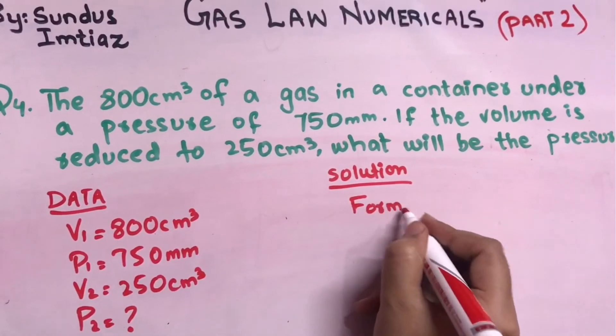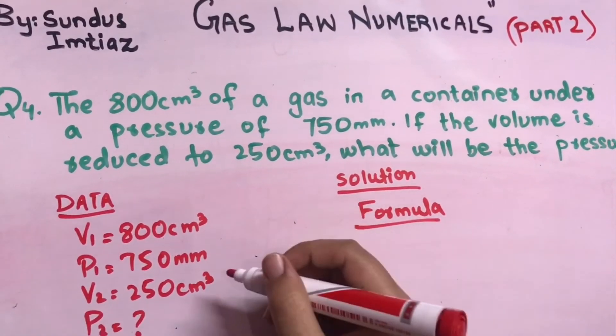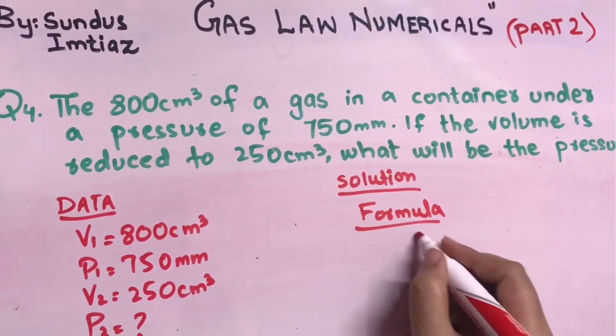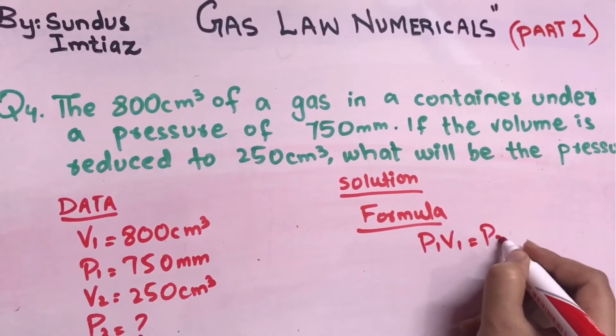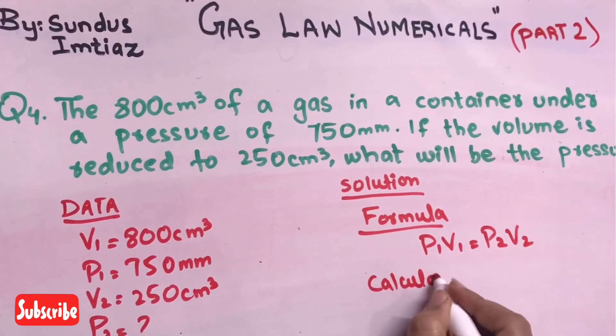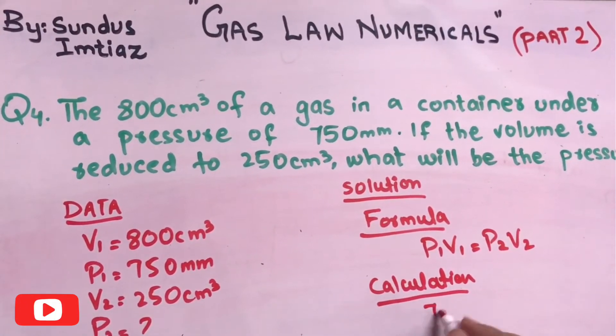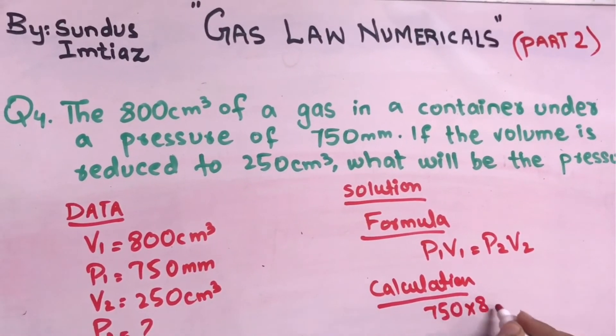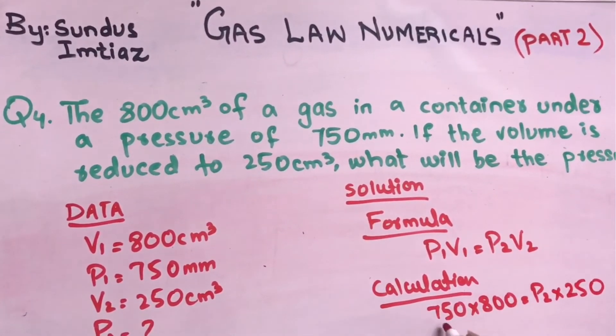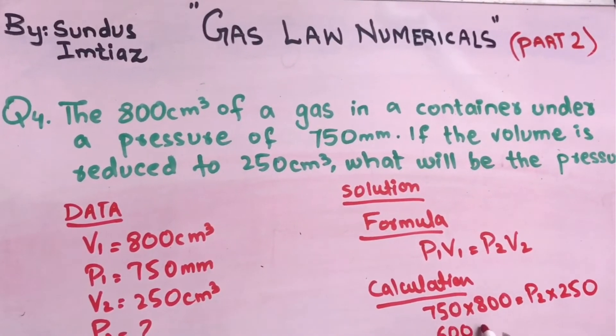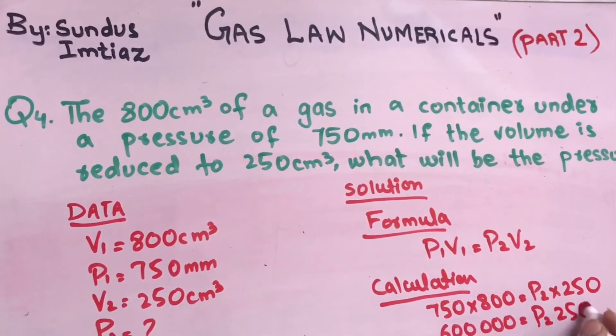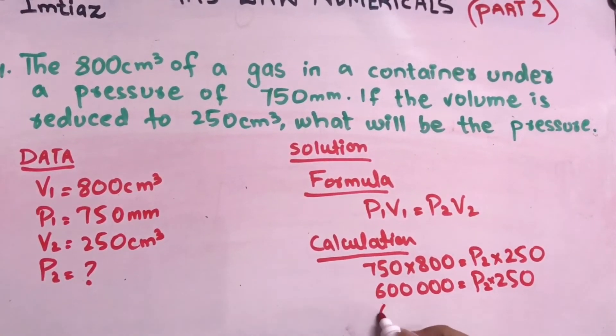Now let's move to this solution. The formula for this numerical is obviously the same as you have seen, the volume and pressures are given, so the relationship between the pressure and the volume is given by Boyle's law. So the formula for them is p1v1 equals p2v2. Now moving to the calculation. P1 is 750, v1 is 800, p2 is unknown, and v2 is 250. After multiplying you will get 600,000 and p2×250. This 250 will divide in the opposite side.